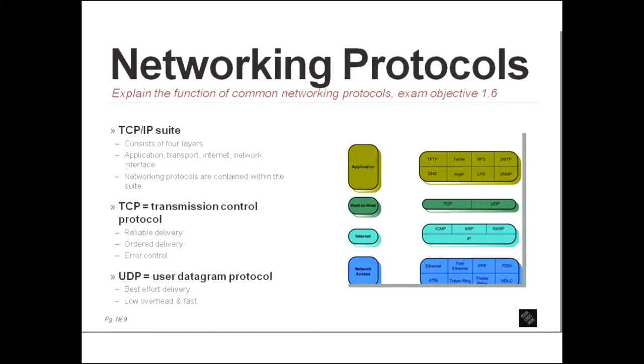Layer four, which is the transport layer in the OSI model, is the host-to-host layer in the TCP IP Suite, also called the transport layer. And finally, the application, presentation, and session layers, which are seven, six, and five in the OSI model, those are all rolled into the application layer of the TCP IP Suite. All the networking protocols that you need to know about are in this suite in one way or another.